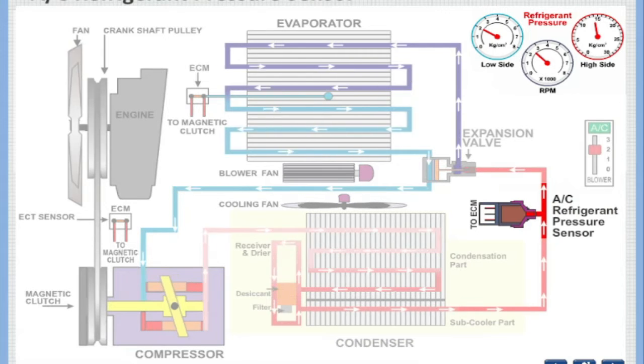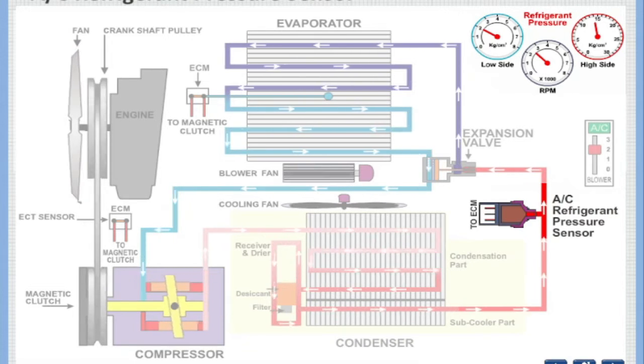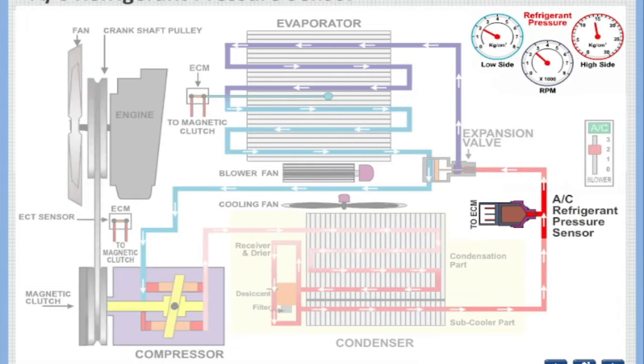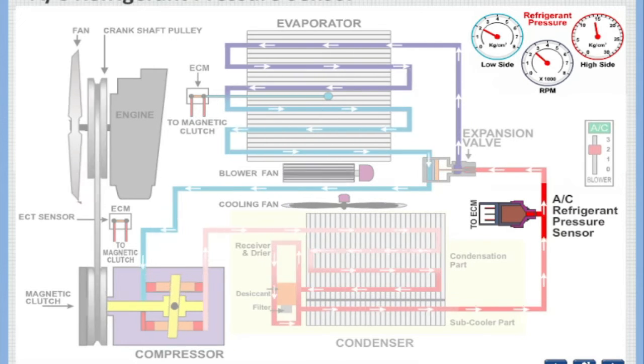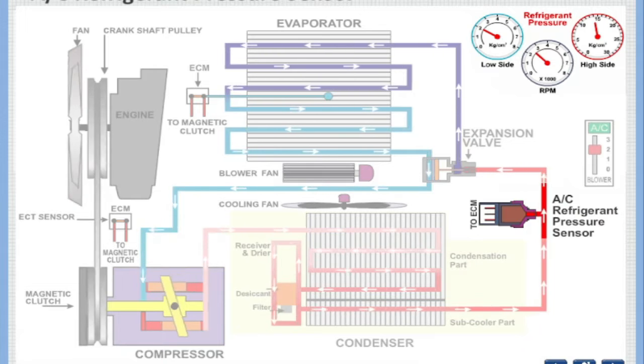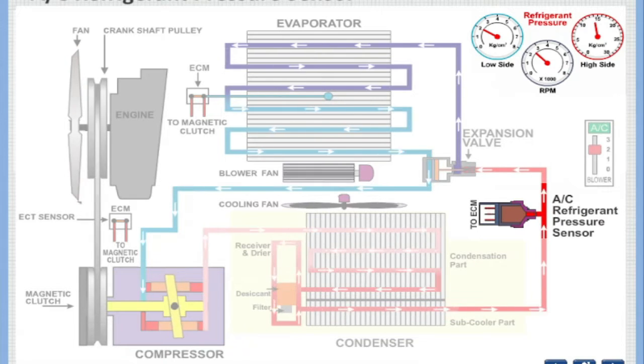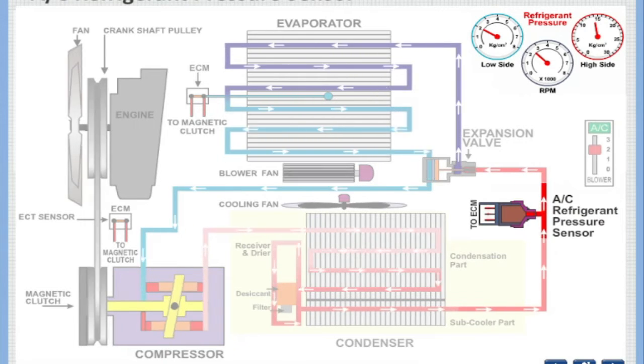In new vehicles, AC refrigerant pressure sensor is used to detect refrigerant pressure available in the high-pressure line. Depending upon the pressure, it generates a voltage signal and sends it to the ECM.